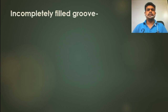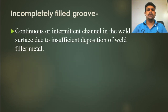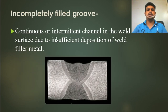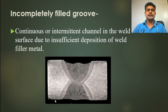Another type of imperfection is incomplete fill groove. What is incomplete fill groove? It is a continuous or intermittent channel in the weld surface due to insufficient deposition of weld filler metal. When we are doing the welding, if we do not weld properly — for example, if we need to do a full run of welding but only complete 3 runs — this type of problem occurs. The weld should reach the parent material thickness; failing to do so is called incomplete fill groove.